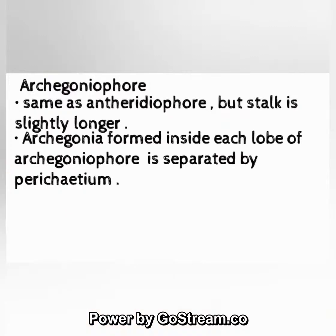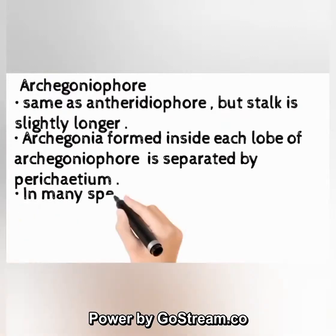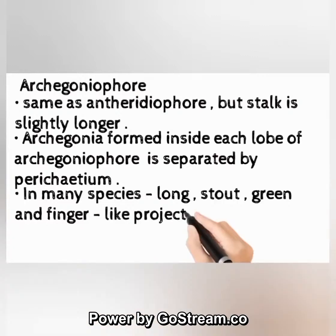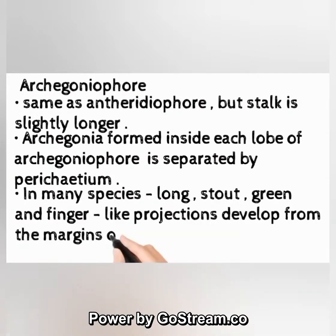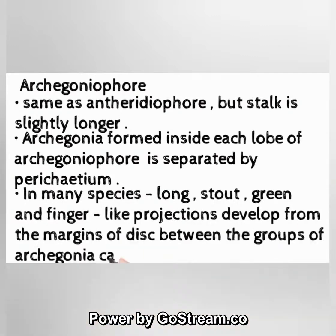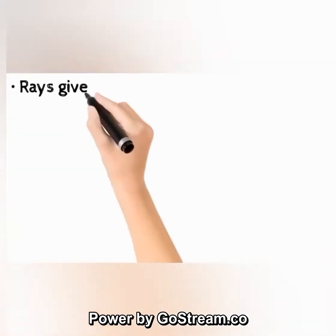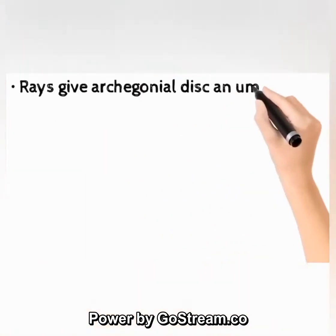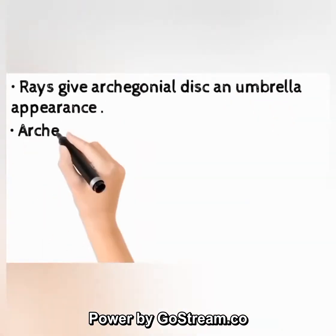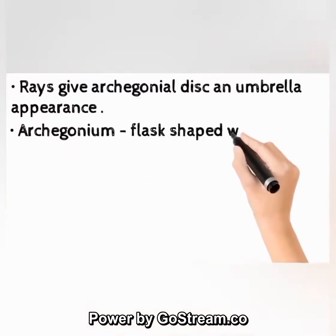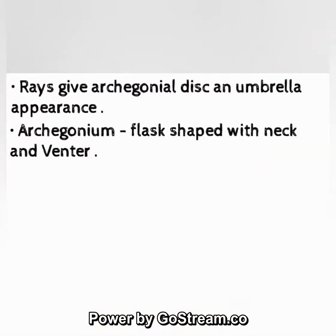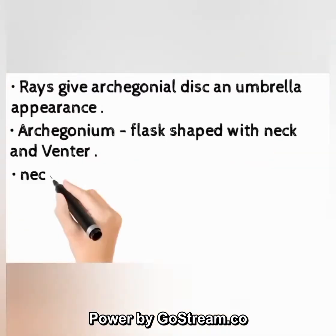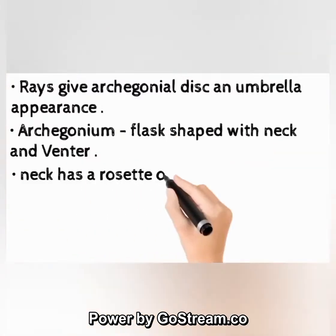In many species, long stout green finger-like projections develop from the margins of the disc between the groups of archegonia — these are called rays. Rays give the archegonial disc an umbrella appearance. The archegonium is flask-shaped with neck and venter. The neck has a rosette of four cover cells.